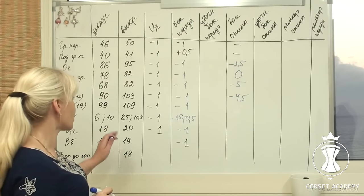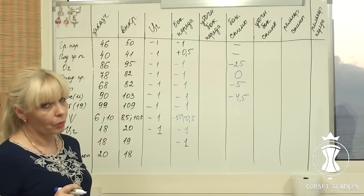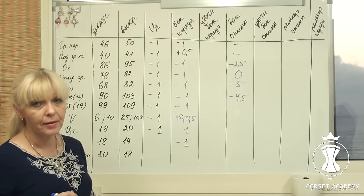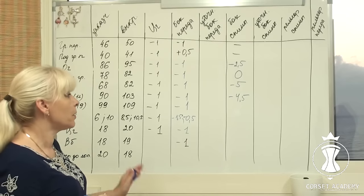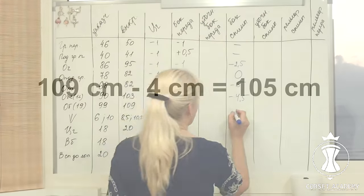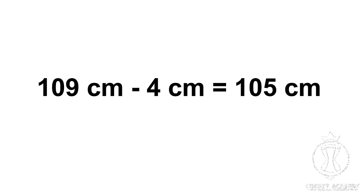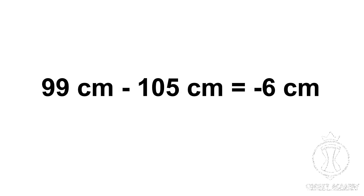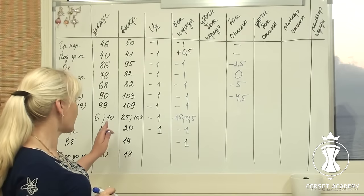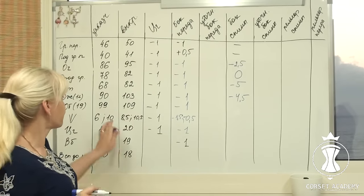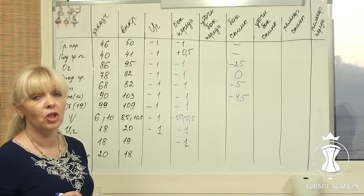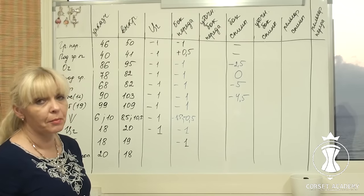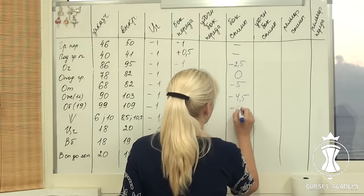I reach the hip line 19 cm below the waistline — the hip circumference. It is 99 cm on the client and 109 cm on the pattern. 109 cm minus 4 cm equals 105 cm. 99 cm minus 105 cm equals negative 6 cm. I divide the value in half. As a result, I need to shift either side of the back 3 cm inwards at the level of the hip line. I write negative 3 cm in the table.